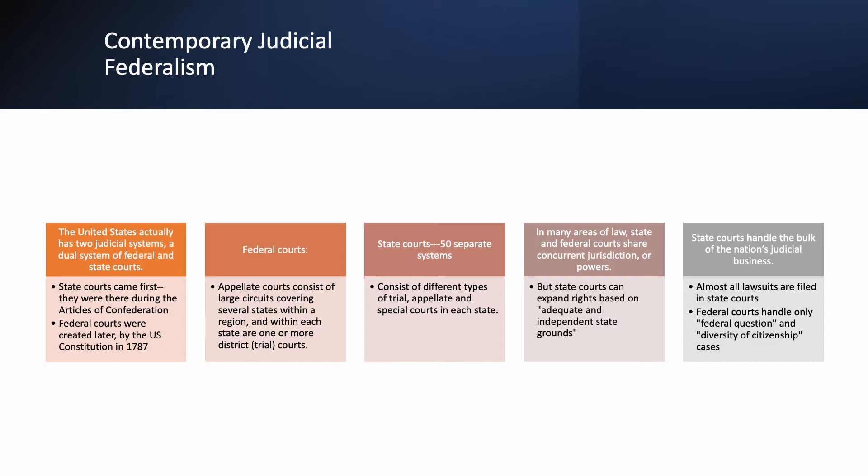Usually, if the states want to do things one way and the federal government says they can't, the federal government prevails. For example, in Roe v. Wade, when the Supreme Court decided the Constitution gives everyone the right to an abortion under certain conditions, that meant that in states where it was illegal, those laws became invalid. Federal law takes precedence because of the Supremacy Clause.